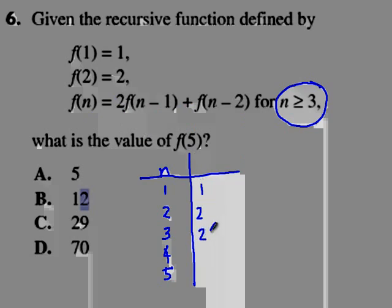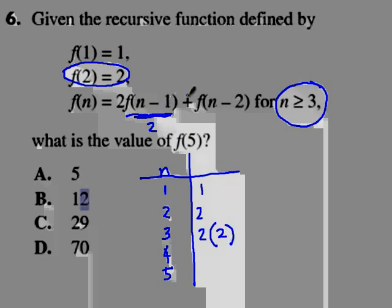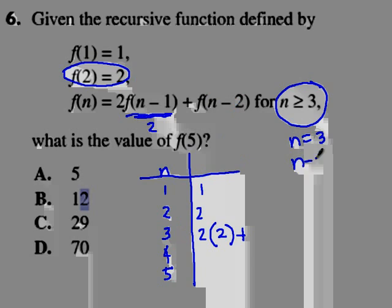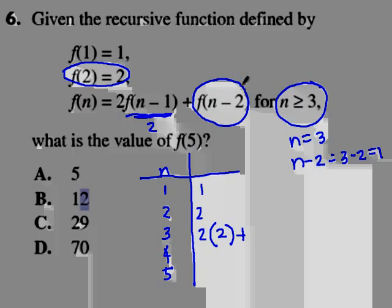We compute that as 2 times, what is f of n minus 1? Our n is 3. If n is 3, 3 minus 1 is 2. So what is our f of 2? f of 2 is 2. So therefore, this value, f of n minus 1, is simply 2. Plus f of n minus 2. If our n is 3, what is n minus 2? That becomes 3 minus 2 equals 1. In other words, we are asked to find what is f of 1 here. So what is our f of 1? f of 1 is this value, 1. So therefore, our value here is 2 times 2, 4, plus 1 is 5.